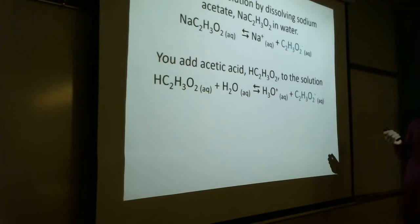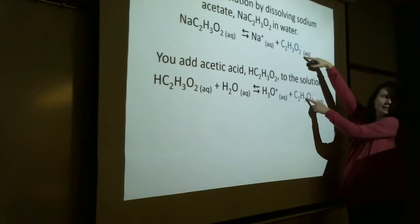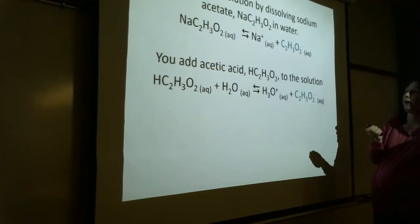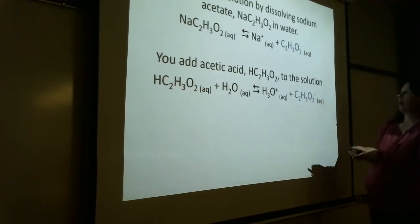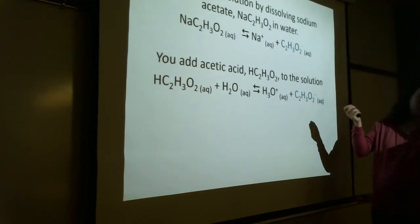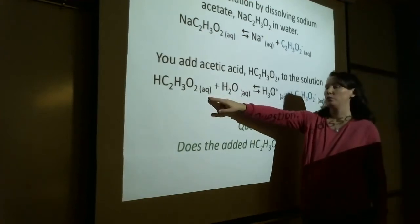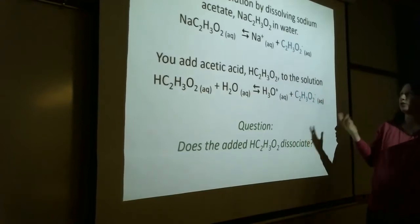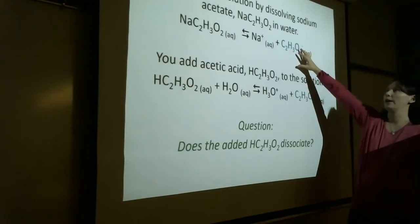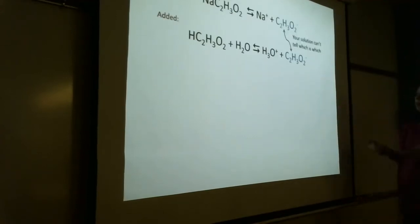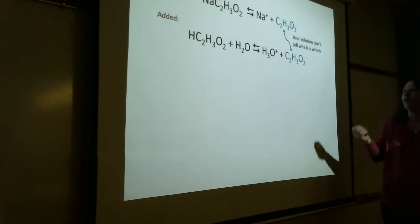What do these two equations have in common? They both contain acetate. So if I've got this equilibrium in effect and I add acetic acid, I'm essentially adding something that's already in the solution. Thinking back to Le Chatelier's principle — if I've got a product and I increase its concentration, which way is the equilibrium going to shift? It's going to go away from it.